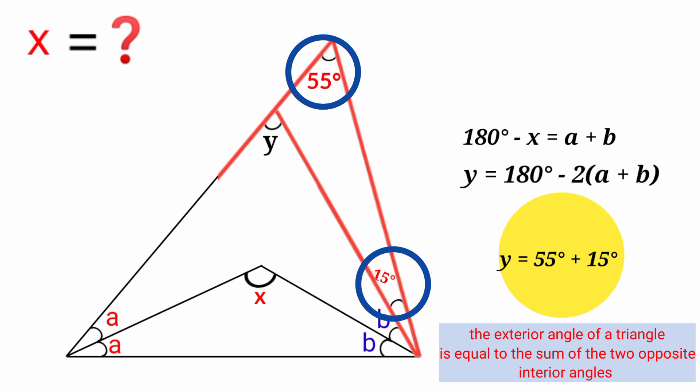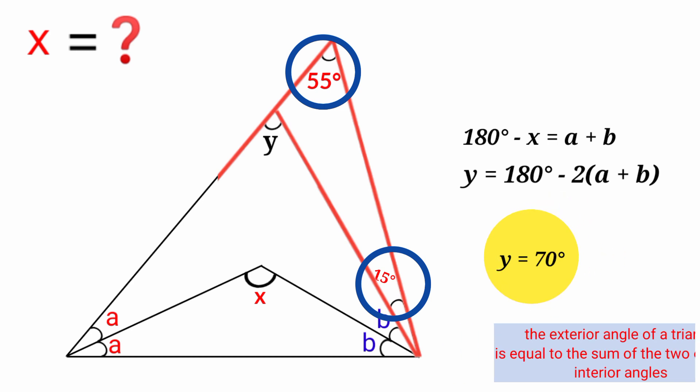So y equals 55 degrees plus 15 degrees. 55 degrees plus 15 degrees is 70 degrees. So y equals 70 degrees.